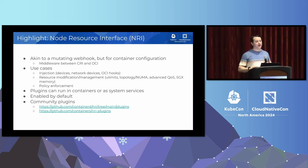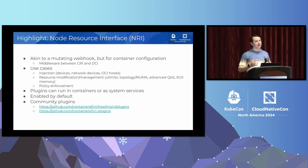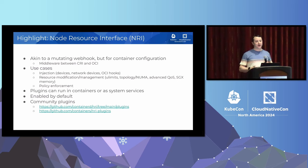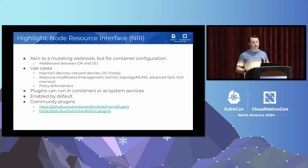I have a couple things I want to do a deeper highlight on that I'm particularly excited about. The first one is Node Resource Interface, or NRI. NRI is a mechanism for customizing the underlying container configuration beyond the kinds of things you can do in the pod spec or beyond the defaults that ContainerD gives you. It's effectively middleware between the CRI layer — which is the layer that the kubelet uses to control the container runtime — and the OCI layer, which is the underlying implementation for Linux containers. It lets you do things like inject different devices, inject network changes, do OCI hooks at that level, and do some really interesting things with resources, including support for setting things like ulimits, which is not possible to do through the Kubernetes API today.